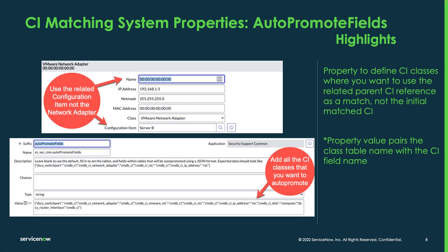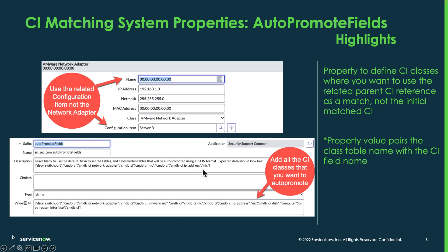The next property is auto promote. Auto promote is used to return the proper CI. For example, we're looking at a network adapter — we don't want to have a vulnerable item or discovered item against a network adapter; we want it against the associated server. So we can tell it to walk up to the parent record. You can see we've got the VMware NIC, and we want to use the CI record instead. Out of the box it will use these values, but if you want to add more — such as VMware NIC — you can add additional classes.